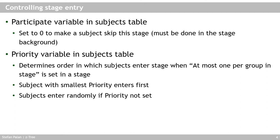The priority variable, also in the subjects table, is used when a stage has the 'at most one per group' option set. CETRI checks the priority variable to decide which subject enters the stage next when multiple subjects are waiting. The subject with the smallest priority value enters first. If the priority is not set and stays at its default value, subjects enter randomly.